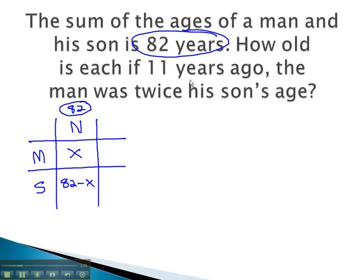The next column, we fill in by the change in time, 11 years ago. Subtracting 11 from each cell gives us x minus 11, and 82 minus 11 is 71 minus x.